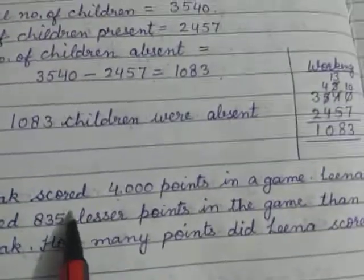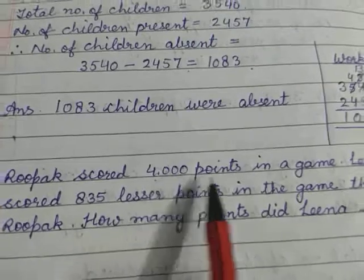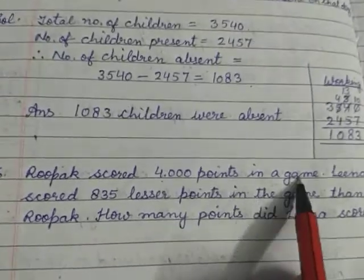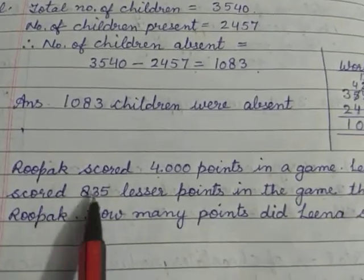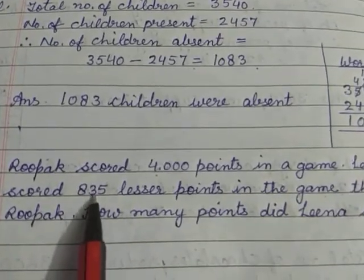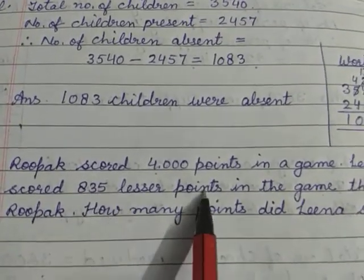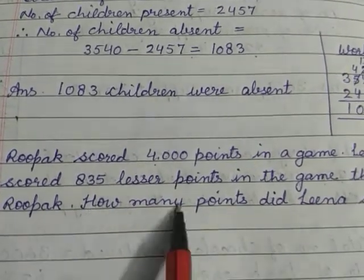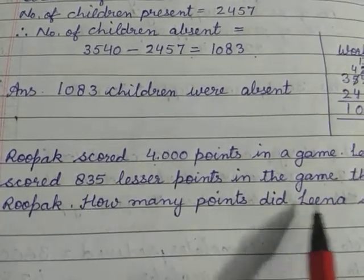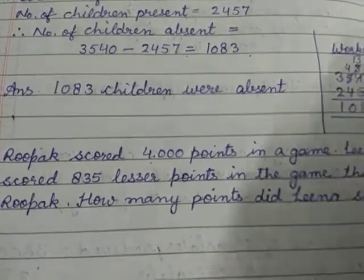Rupak scored 4000 points in a game. Leena scored 835 lesser points in the game than Rupak. How many points did Leena score?